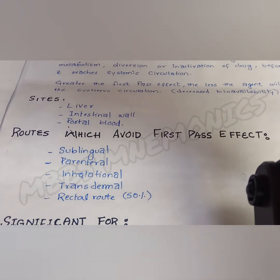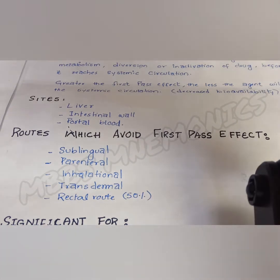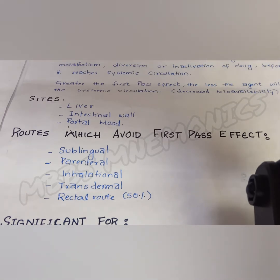The routes that avoid the first pass effect are sublingual, parenteral, inhalational, transdermal, and rectal routes — though rectal avoids it only to some extent. Drugs administered via these routes do not undergo first pass effect, so drug concentration is not reduced.